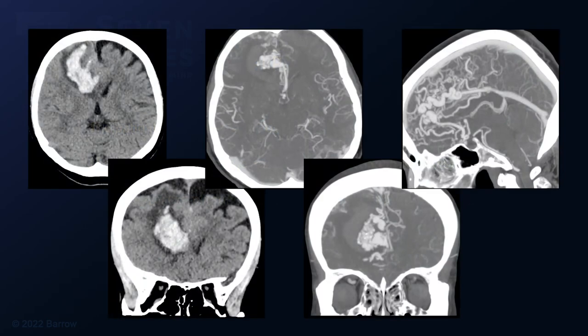Her CT scan demonstrates a large hematoma within the frontal lobe. CT angiogram demonstrated an underlying tangle of vessels with marked venous filling draining to the inferior sagittal sinus and straight sinus. These images also show how the hematoma nicely separated the lateral border of the AVM from the frontal lobe.